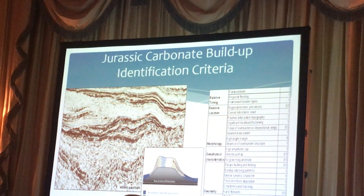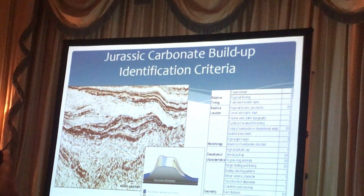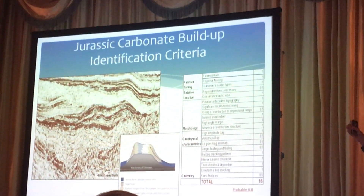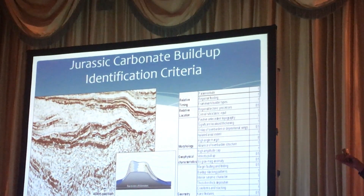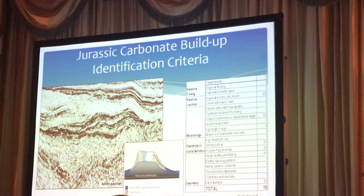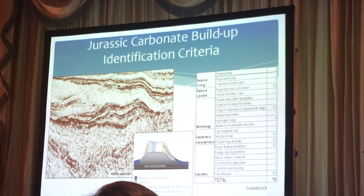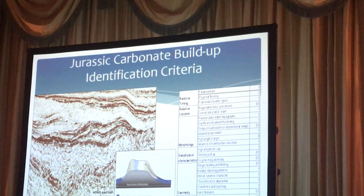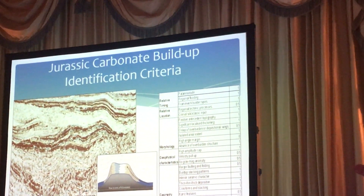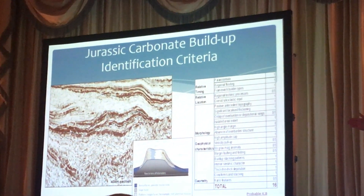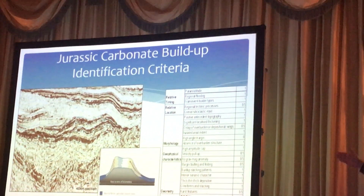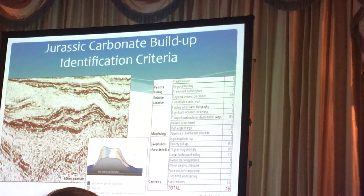This is a carbonate buildup — do you believe me? We didn't just stop there, because this is such an extensive buildup and complex with such huge potential that we had to do more work. So we did an analysis following Burgess et al., a Shell paper. He looks at a series of 20 factors in order to de-risk a buildup identified on seismic, because when you see something on seismic it can be anything. When you look at all the different criteria, you are de-risking that buildup.